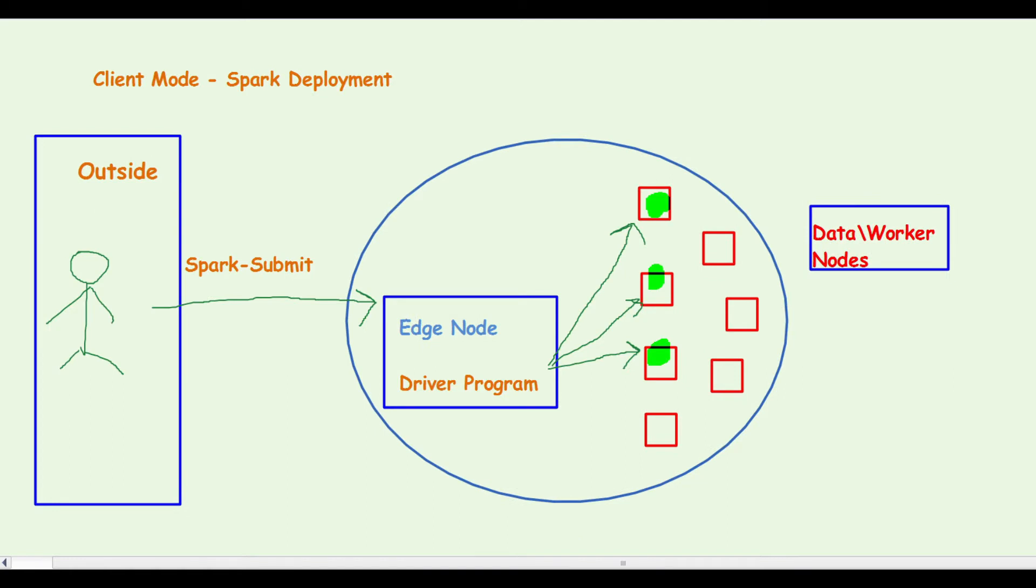In client mode, when a person from the outside world or from outside the big data ecosystem submits a Spark job, the job gets submitted on the edge node and the driver program spawns on the same edge node. Subsequently, the execution happens on the various worker nodes or data nodes. As you can see in the diagram, the disadvantage of this process is...